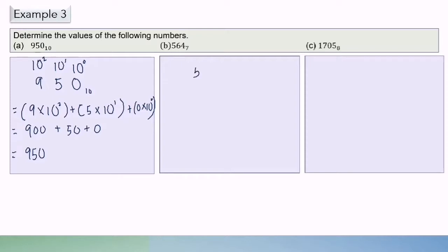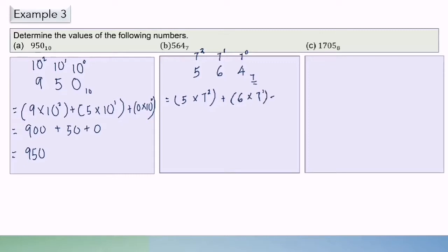Now for 5, 6, 4 in base 7: the base is 7, so we start with 7 power of 0, 7 power of 1, 7 power of 2. To find the value, we multiply each digit by its base value. So 5 times 7 power of 2, plus 6 times 7 power of 1, plus 4 times 7 power of 0.